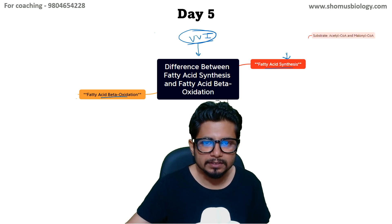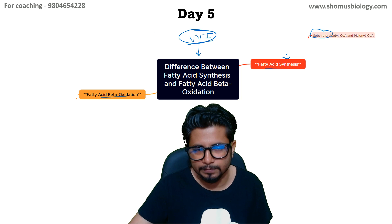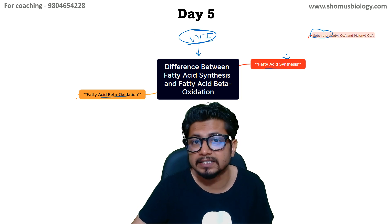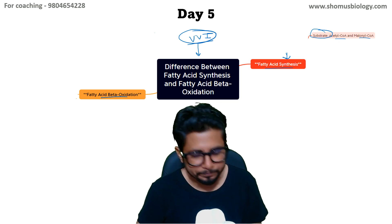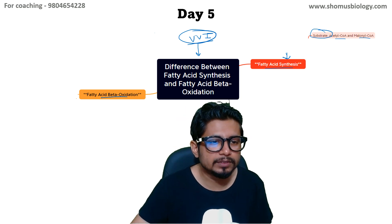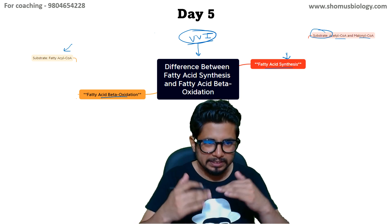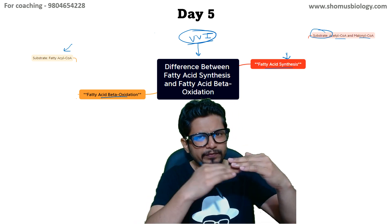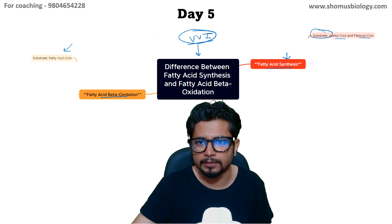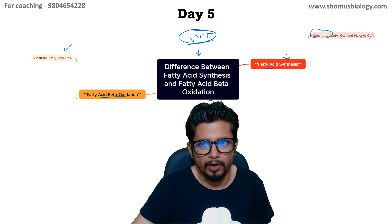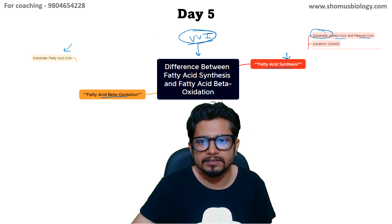Starting with the substrates: the substrates for fatty acid biosynthesis are acetyl-CoA and malonyl-CoA. The substrate used in fatty acid beta oxidation is fatty acyl-CoA, because we start with fatty acid and convert it to fatty acyl-CoA. In biosynthesis, we start with acetyl-CoA and malonyl-CoA.